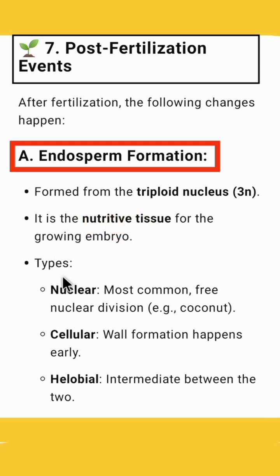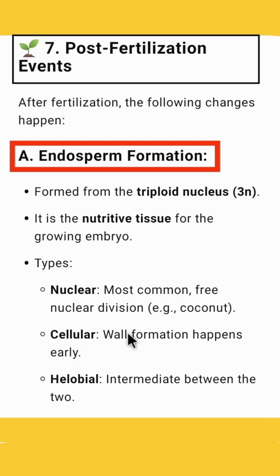Types of endosperm formation: Nuclear endosperm is the most common type. It involves free nuclear division. An example of nuclear endosperm formation is coconut. Second is cellular endosperm formation, where wall formation happens early. Helobial endosperm formation is an intermediate type of endosperm formation.